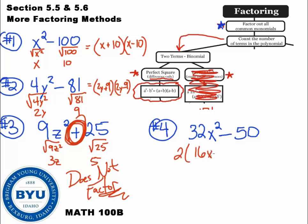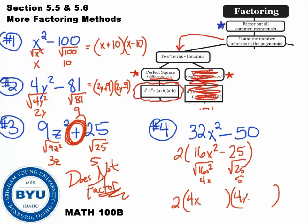That leaves me with 16x squared minus 25. Okay. I've got two terms. Are they perfect squares? I think, yeah. Square root of 16x squared would be 4x. So that works. Square root of 25 is 5. So I would write out these two factors. 4x, 4x, and this 5 twice. One with plus, one with minus.